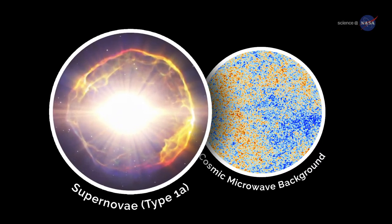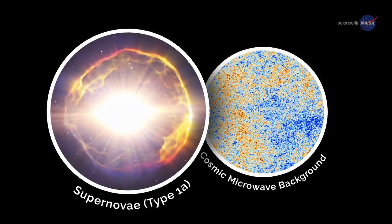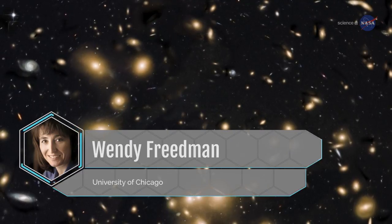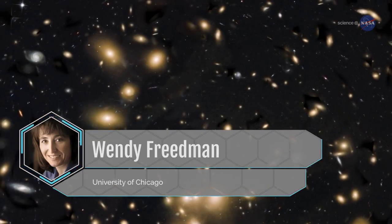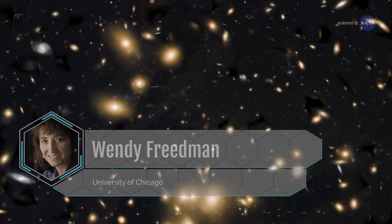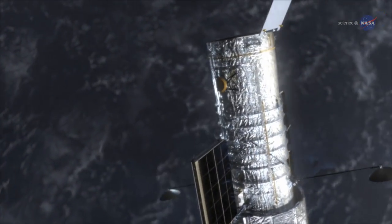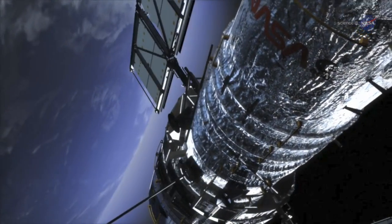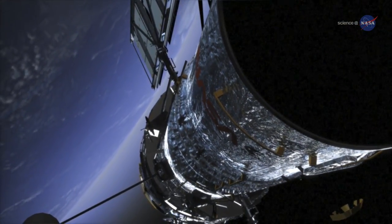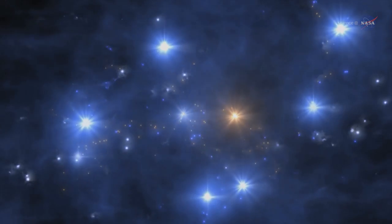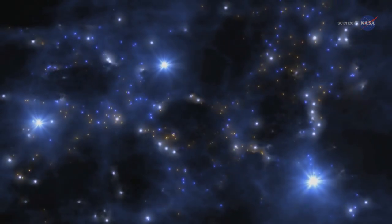A recent study using the first method yielded an 8% greater expansion rate than the second method's result. Now scientists are asking: are we missing something? Wendy Friedman, Sullivan Professor of Astronomy and Astrophysics at the University of Chicago, says it could be that we don't understand the uncertainties well enough to know why these two methods differ. Another intriguing question: is it incorrect to expect agreement in these measurements of H-naught? Maybe the standard model of cosmology, which predicts agreement, is wrong.